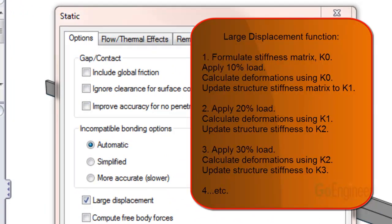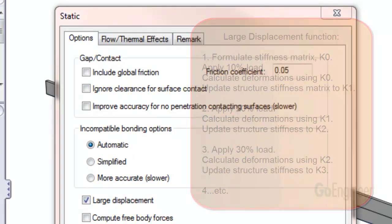It works like this. In the first step, 10% of the loads are applied and the deformations are solved. The stiffness matrix for the system is then updated to reflect this condition. Then, the loads are increased to 20%, the problem is solved, and the stiffness matrix is updated again. The loads are increased to 30%, and so on.